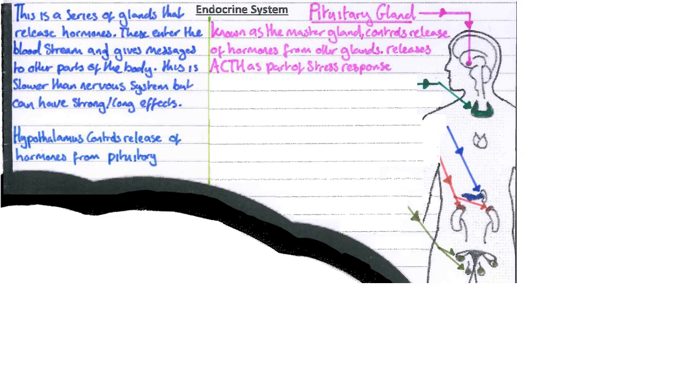The pituitary gland is known as the master gland, so generally has control over many of the other glands in the body. It controls the release of ACTH, and this is a part of the stress response.